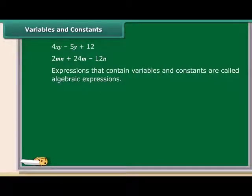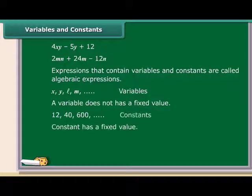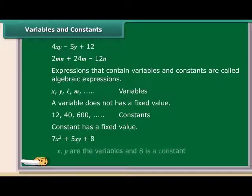Expressions that contain variables and constants are called algebraic expressions. The letters such as x, y, l, m, and so on are used to denote variables. A variable can take various values and its value is not fixed. On the other hand, a value that does not change is a constant. So in an equation, 7x squared plus 5xy plus 8, x and y are the variables and 8 is a constant.